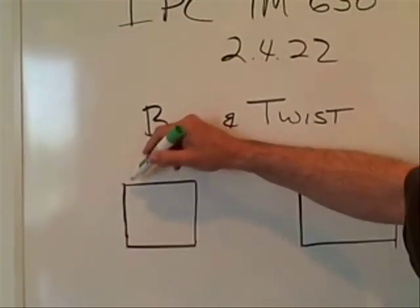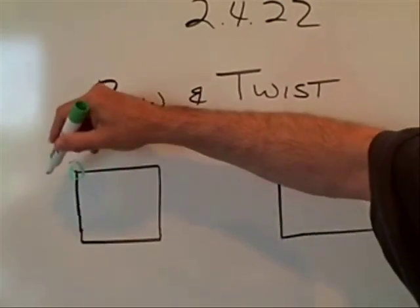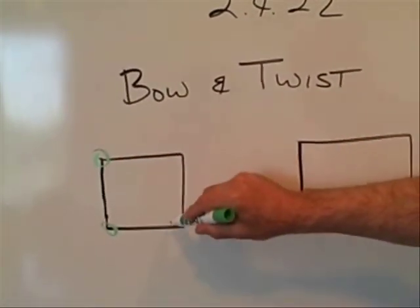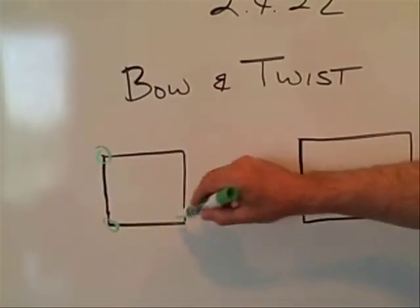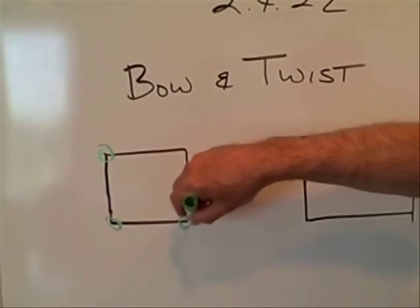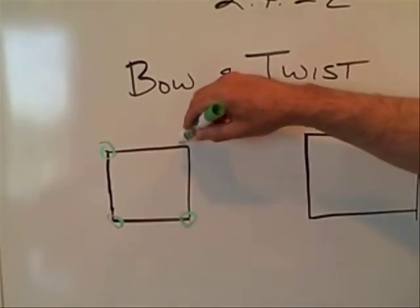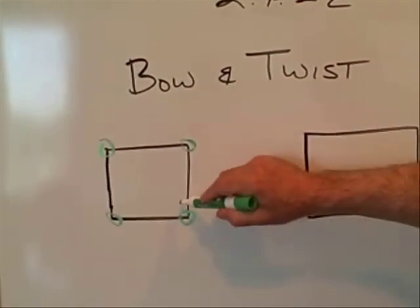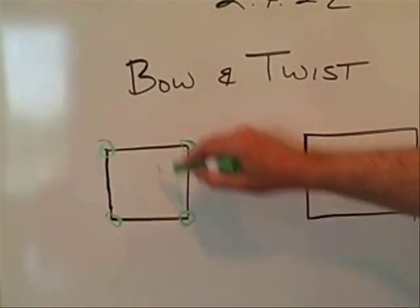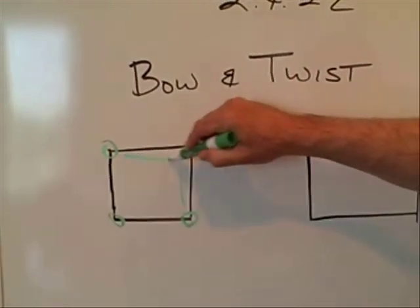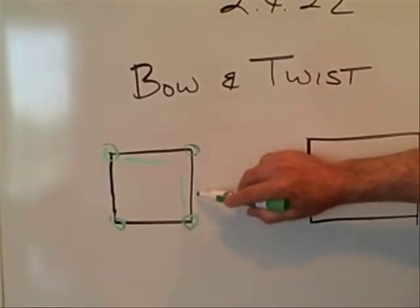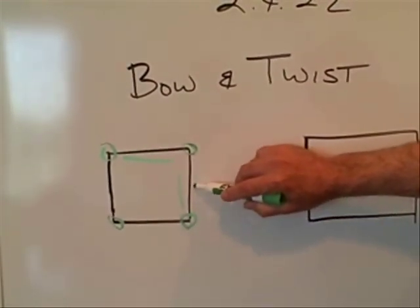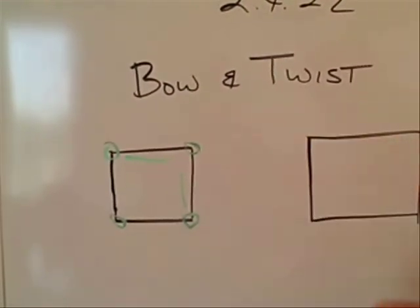A bowed circuit board is one that has its corners that can sit flat on a reference plane. You're going to be measuring this dimension and this dimension. Most of the time the bow will be bent up here.